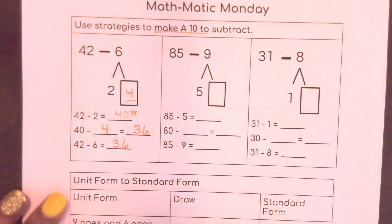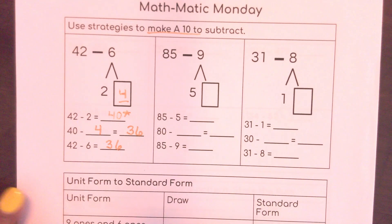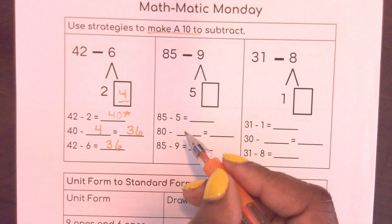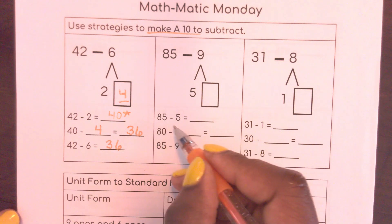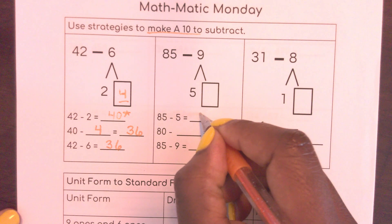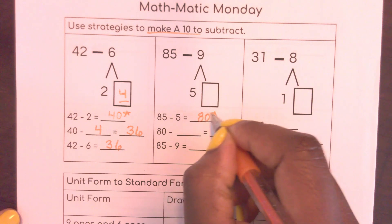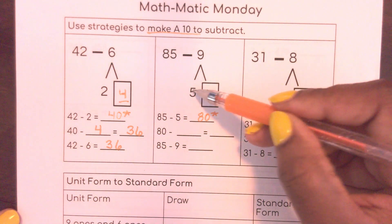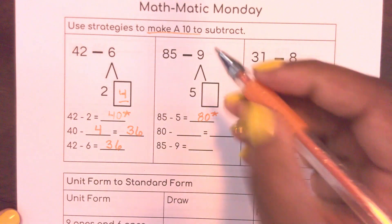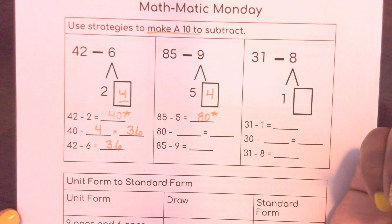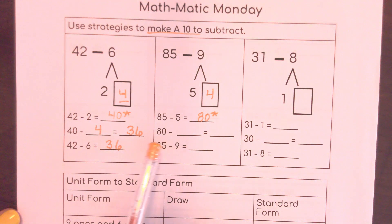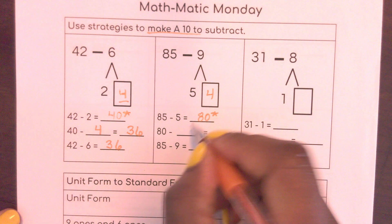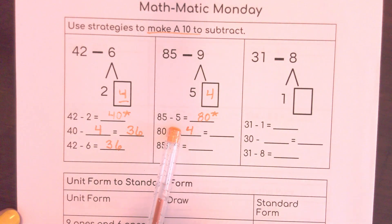So here I have 85 minus 9. Once again, I'm trying to get to a 10. So 85 minus 5 would give me 80. That's the 10 that I made it to. How much more do I need to make 9? 5 plus what would give me 9? 5 plus 4. So now I'm subtracting 80 minus that 4. I subtracted 5 and that gave me 80. Now I'm subtracting the 4, which all together I would have subtracted 9.